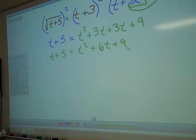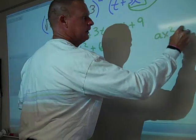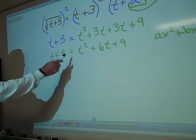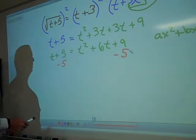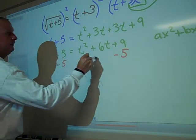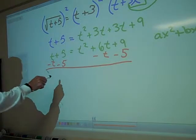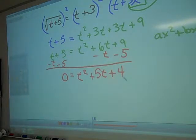T times T is t squared. T times 3? 3T. Inside, 3 times T? 3T. 3 times 3? 9. Combine like terms. So, we're going to get t plus 5 equals t squared. What's 3T plus 3T? 6T. Plus 9.